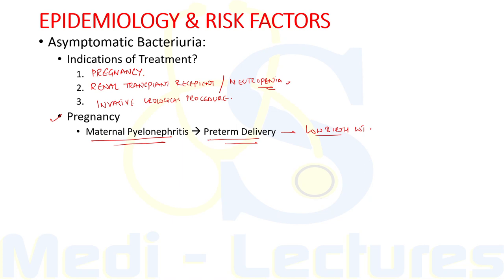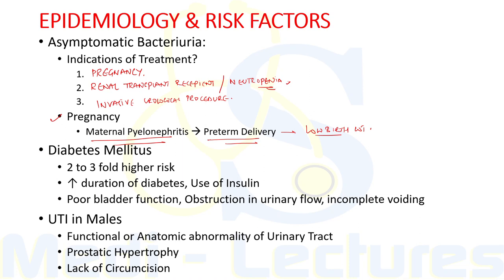Another important risk factor is diabetes mellitus. Women with diabetes have a two- to three-fold higher risk of both asymptomatic bacteriuria and UTI. Increased duration of diabetes and use of insulin compared to oral hypoglycemic agents are typically associated with elevated risk of UTI among females with diabetes.